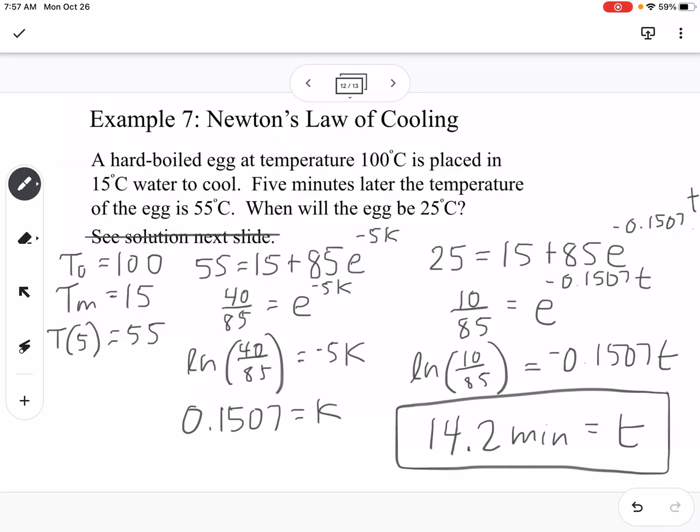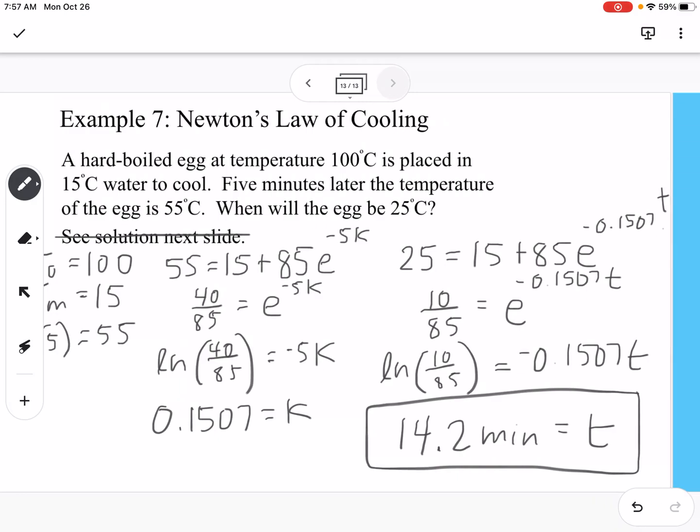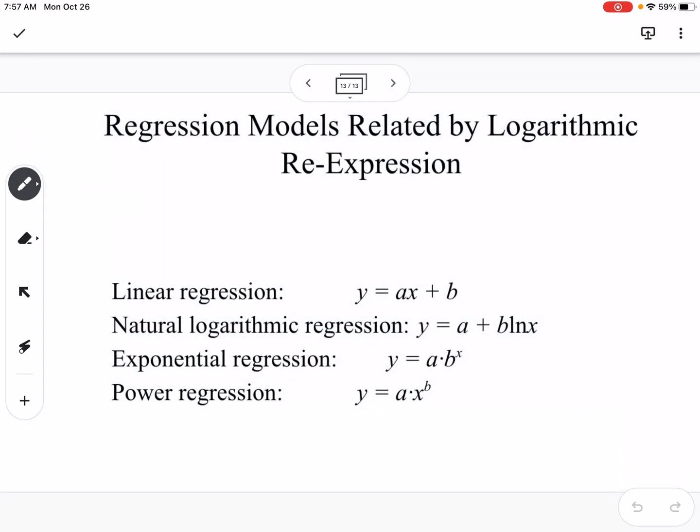That is how we can use Newton's law of cooling. The last thing is giving some regression models. We've talked about linear regression, we've talked about quadratic regression. When you're putting regressions into Desmos, you're using Y1 and approximately equal to, and then you would use your equation, but you would use X1 to refer back to the table that you're putting into Desmos as well.